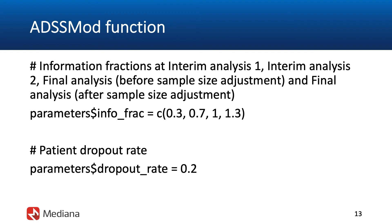The beauty of this adaptive approach is that the sample size is not automatically adjusted to the highest possible value — it's more of a sliding scale approach. The sample size is only increased as necessary. In reality, the information fraction at the final analysis after sample size adjustment would be a number between 1 and 1.3. Regarding the dropout rate, we expect it to be fairly high at 20% at the end of the six-week treatment period. Since this is a fixed duration study where all patients will be followed until the end of the six-week treatment period, we don't need to make explicit assumptions about the patient enrollment process.